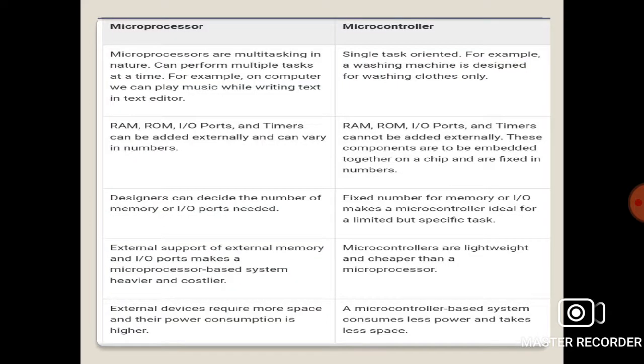Differences between microprocessor and microcontroller: Microprocessor is a small chip which can perform multiple tasks at a time. Microcontroller is a small controller which can perform only a single task. In microprocessor, we can add external components like RAM, ROM, input/output, and timers, but in microcontroller we cannot add externally because components are embedded together on a chip.